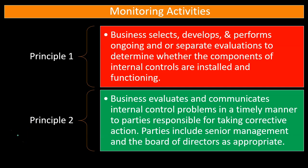Principle number two: the business evaluates and communicates internal control problems in a timely manner to parties responsible for taking corrective action. If there are problems — in the design or implementation of internal controls — we go to the appropriate level of management. This includes senior management and, if there is a serious flaw with substantial risk, the board of directors as well.